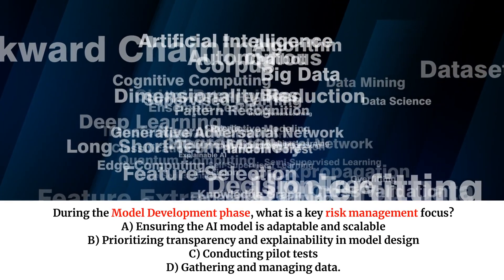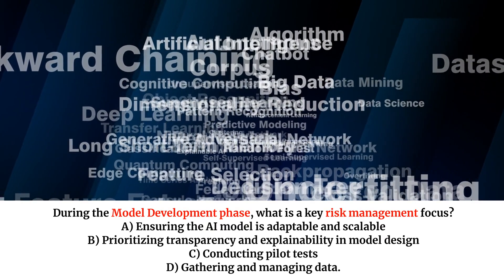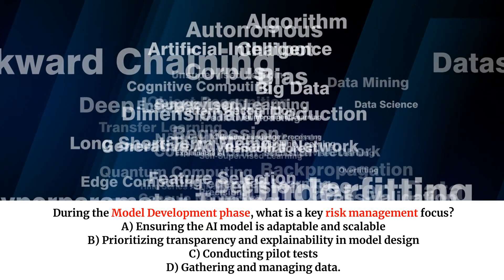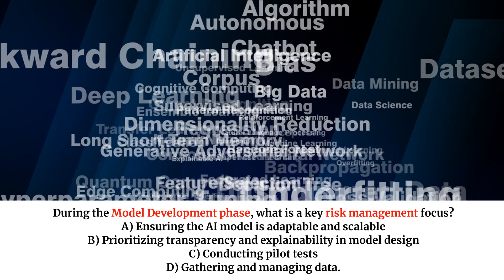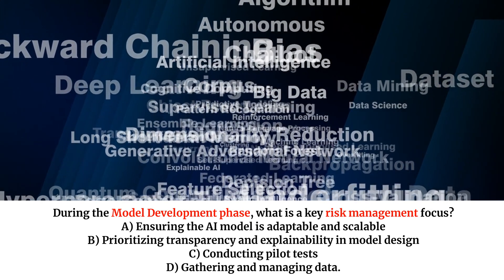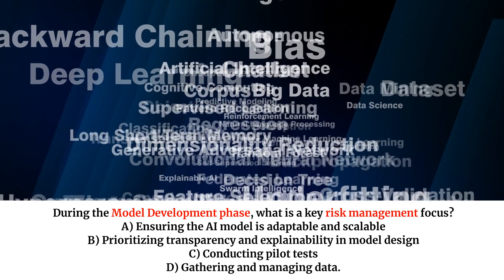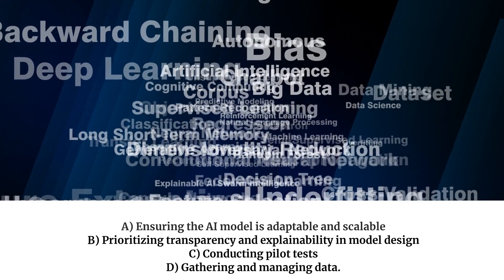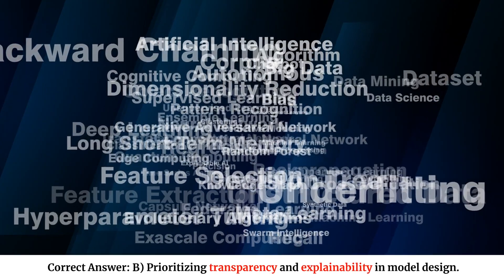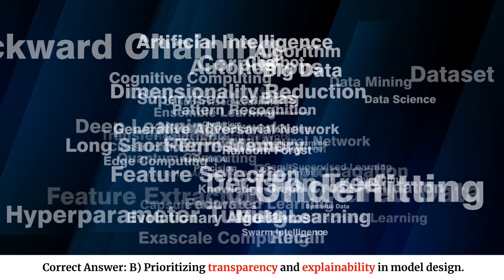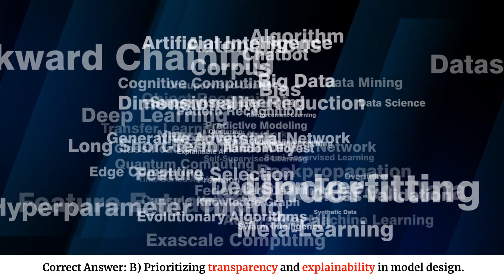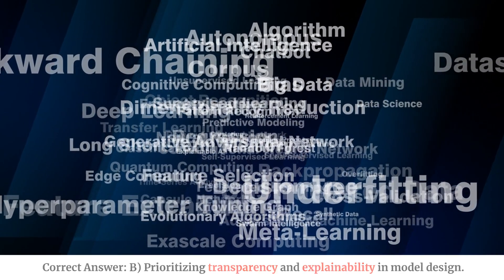During the model development phase, what is a key risk management focus? A. Ensuring the AI model is adaptable and scalable. B. Prioritizing transparency and explainability in model design. C. Conducting pilot tests. D. Gathering and managing data. Correct answer: B. Prioritizing transparency and explainability in model design.